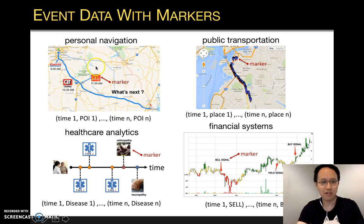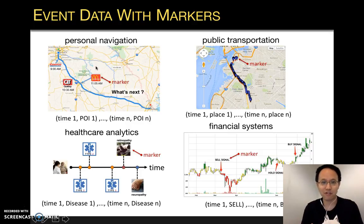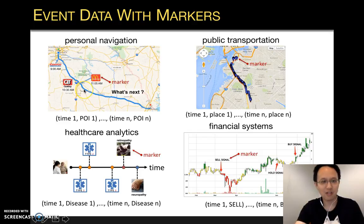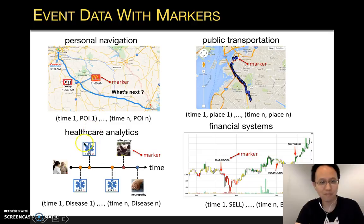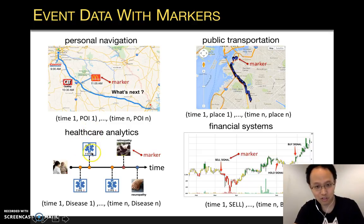In people's lives, temporal events are constantly produced from different domains. Besides the time, this data often contains rich information about the type of each event, often called the marker, such as the location of each visit event, the disease of each clinical diagnosis, and the action taken to each stock at different times.